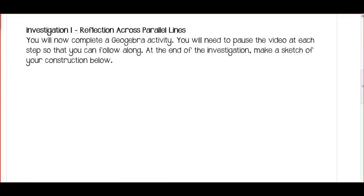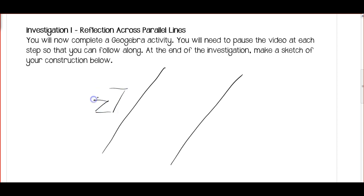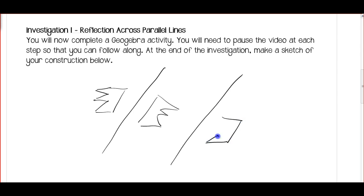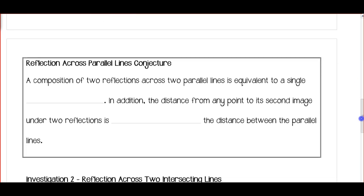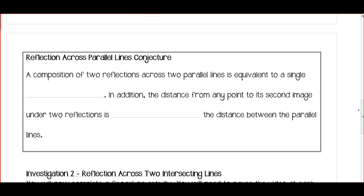Going back to the notes — in this space draw a little sketch of yours. Here are my parallel lines and the shape reflected, something like this. What I want you to do is figure out: if I reflect over two parallel lines, what single transformation could accomplish going from the first image to the third? Fill out the blank lines if you think you know. A composition of two reflections across two parallel lines is equivalent to a single blank.